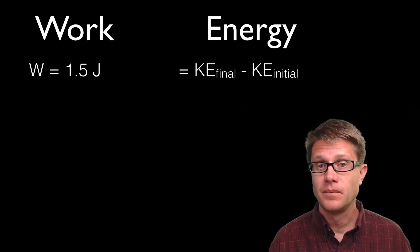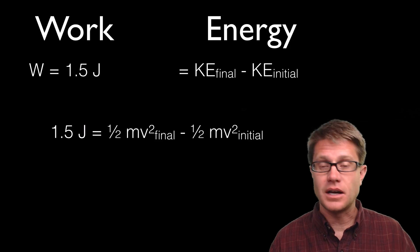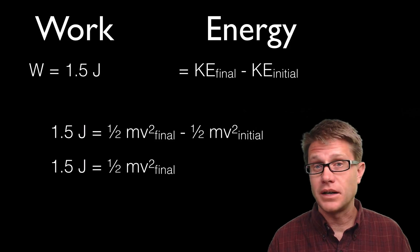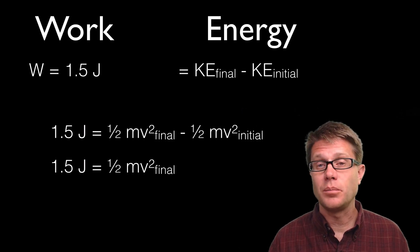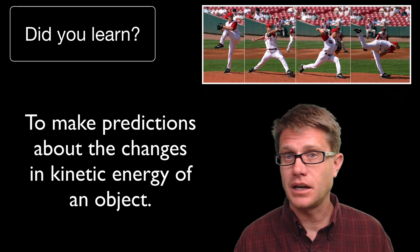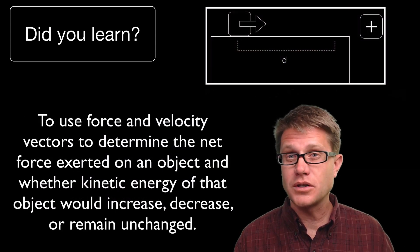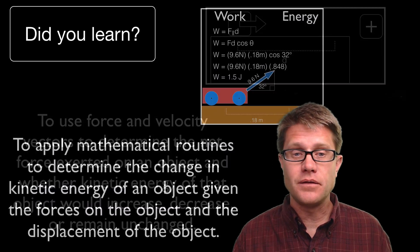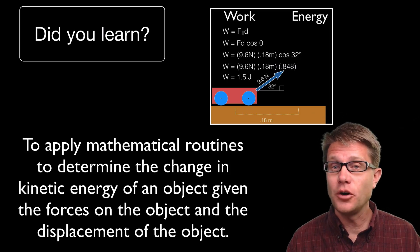The amount of work done on that cart equals the kinetic energy gained, which is final kinetic energy minus initial kinetic energy. If you were given the mass of the object, since it is accelerating from rest you could say its initial velocity is zero and figure out its final velocity. So again, work and energy are equivalent. Did you learn to make predictions about the changes in kinetic energy of an object? Can you use the force and the velocity to qualitatively figure out whether we are adding energy or taking it away? And can you figure out the amount of work on an object and therefore the amount of energy being added? I hope so and I hope that was helpful.